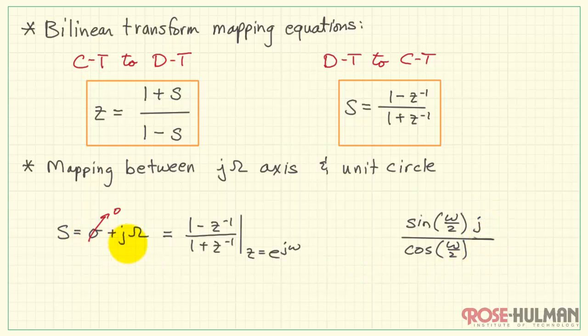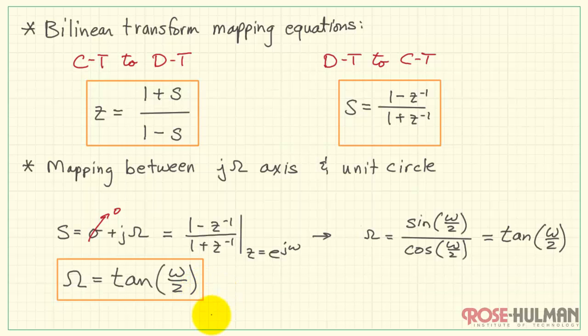Now just a reminder that how we got here is we said that this was j omega equals this expression. You see the j's are dividing out, and you might recall that sine divided by cosine is the same thing as tangent. And all of this boils down quite nicely to say that capital omega equals tangent of little omega divided by 2.